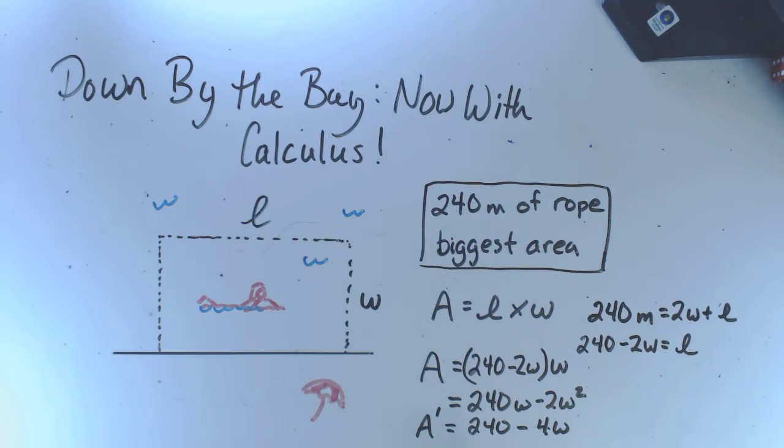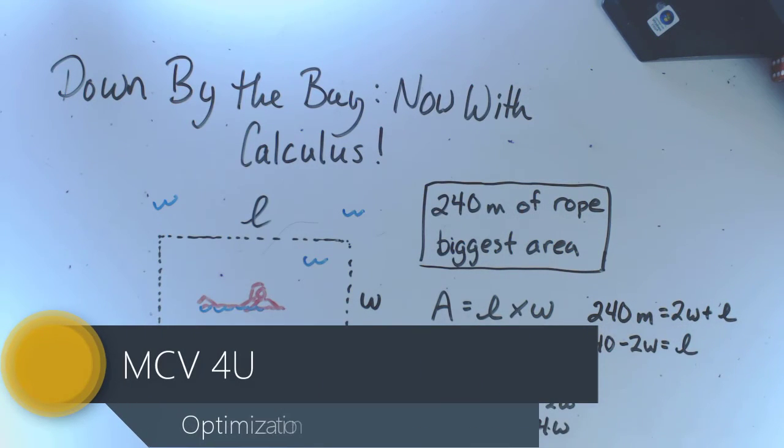The important thing I want you to realize is that there is a relationship to be maximized, in this case area, and a constraint that's going to relate the two variables together so you can do the substitution.